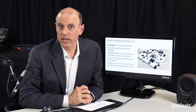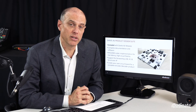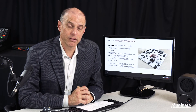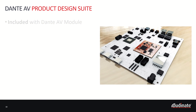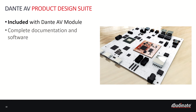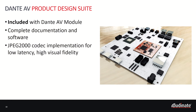The product design suite is a recipe — a cookbook to build a video product. It includes all the documentation, signaling, software for management of the encoder and decoder, upscaling and downscaling. Dante AV is a complete reference for a final product. Also included is a JPEG 2000 4K60 4:4:4 codec implementation. It's a binary image that can run on an FPGA, and the codec has been optimized for low cost and high performance.